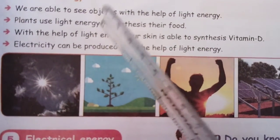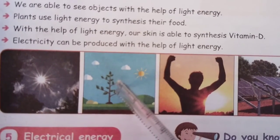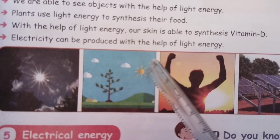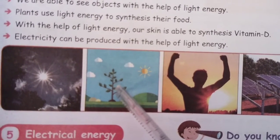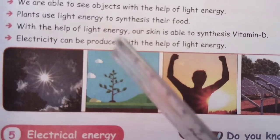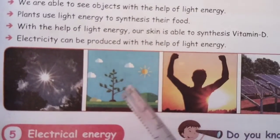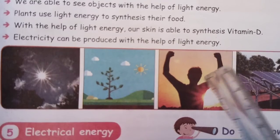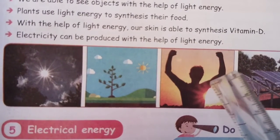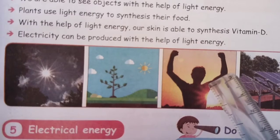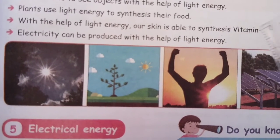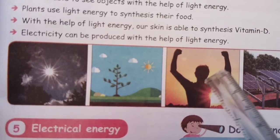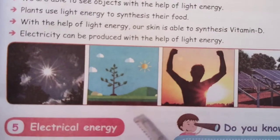Plants use light energy to produce their food. The leaves of plants prepare the food, and plants use sunlight for preparing food during daytime. So plants use light energy to produce their food. With the help of light energy, our skin is able to synthesize vitamin D. Doctors always advise us to get sunlight during the morning time because sunlight gives vitamin D. If you stand in sunlight, our skin produces vitamin D with the help of light energy from the sun.